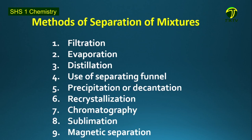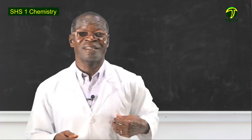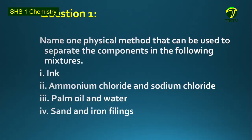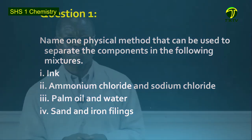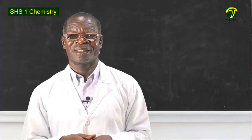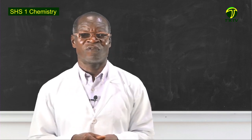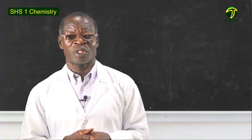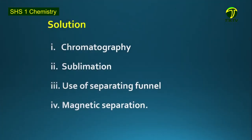Students, we have discussed these separation methods. Question one: name one physical method that can be used to separate the components in the following mixtures: ink; ammonium chloride and sodium chloride; palm oil and water; sand and iron filings. The answers are: for ink — chromatography; ammonium chloride and sodium chloride — sublimation; palm oil and water — use of separating funnel; sand and iron filings — magnetic separation.